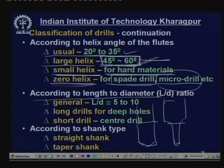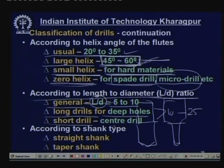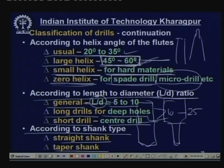According to length-to-diameter ratio: normally L/D should be within 5 to 10. If L/D is too large the drill becomes weak; if too small, chip removal is difficult. Long drills for deep holes have L/D greater than 10, up to 25. Short drills such as centre drills have L/D of about 2 or 3. According to shank type: straight shank drills are held in a chuck; taper shank drills are fitted directly into the spindle or a socket.